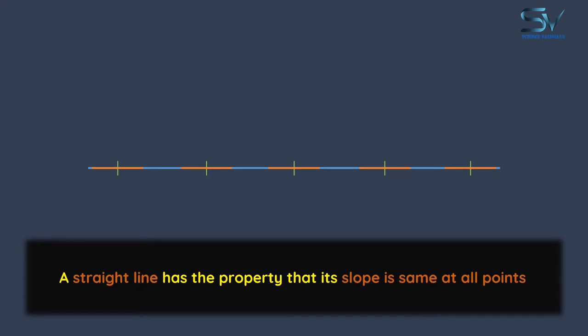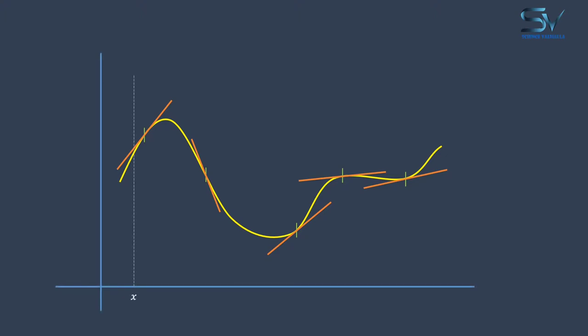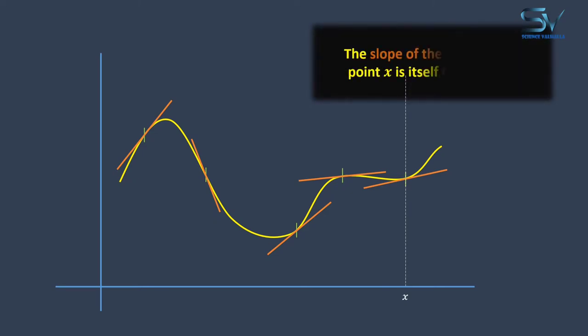However, if we discuss any other curve, as we have drawn this curve here, the slope of the tangent line varies with position. In other words, as we change the position of x, the slope of tangent line changes as well. This means that the slope of graph at any point is function of x.